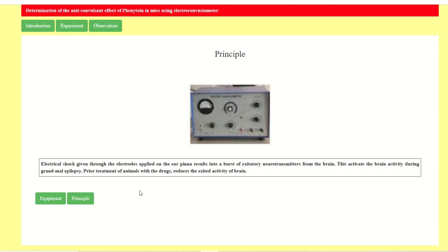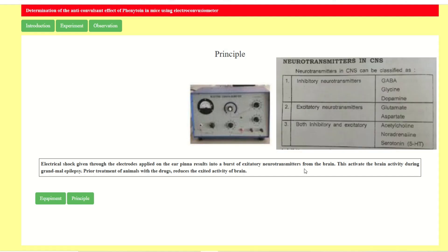After electric shock, it bursts the excitatory neurotransmitters. The excitatory neurotransmitters are glutamate and aspartate. The inhibitory neurotransmitters are GABA, glycine, and dopamine. Acetylcholine, norepinephrine, and serotonin are both types. These are the classifications of neurotransmitters in the CNS.